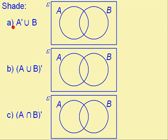So, for A, we want the complement of A, that's everything that's not in A, united with everything that is in B. So, everything that's not in A is this and I need to include everything that's in B as well. So, we also need to shade in this part and this is the finished answer.